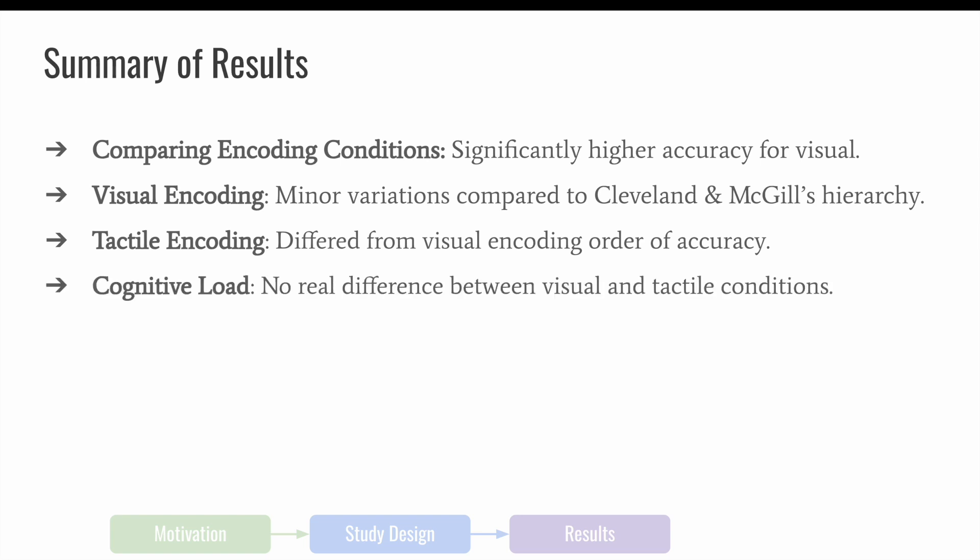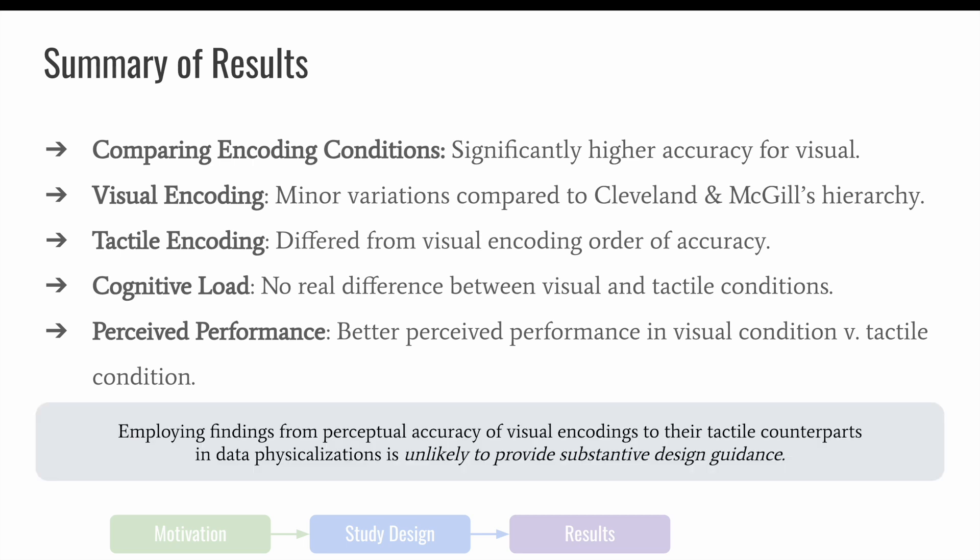We did not observe any meaningful difference in cognitive load between tactile and visual encodings, but people did feel more confident in their performance with visual compared to the tactile. These findings ultimately informed us that it is likely misleading to directly apply findings from perceptual accuracy of visual encodings to their tactile counterparts in data physicalizations.